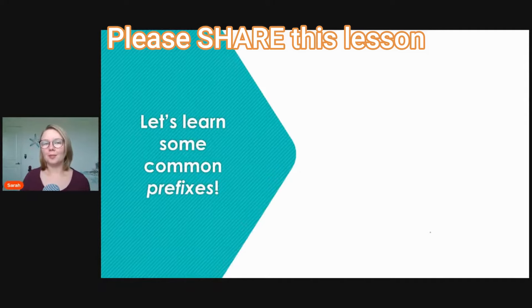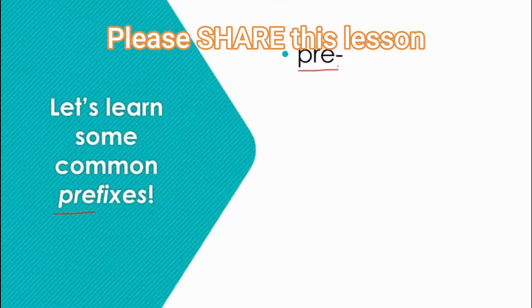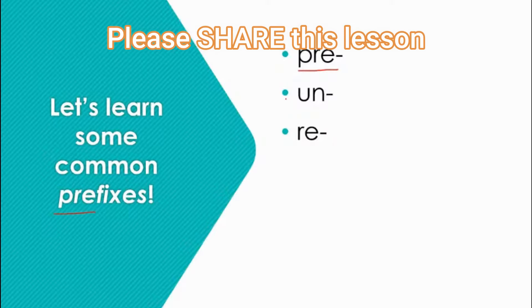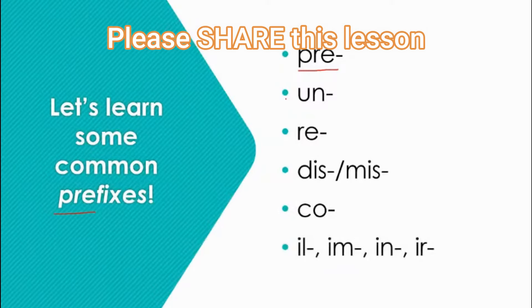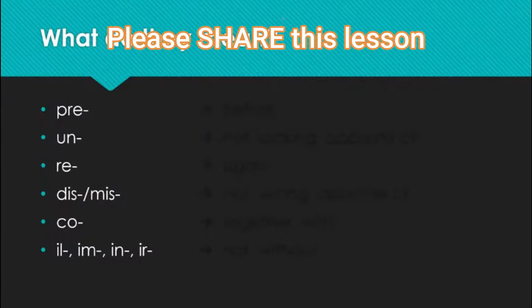Let's begin by learning some common prefixes. Prefixes come at the beginning of words. Our first prefix is 'pre.' As we see here, the word 'prefix' itself has the prefix 'pre,' which means 'before.' Next we will talk about the prefix 'un,' then 're,' 'dis' or 'mis,' 'co,' and 'il,' 'im,' 'in,' and 'ir.' If they're grouped together, it means they have the same meaning. Let's take a look at what each of these prefixes mean.